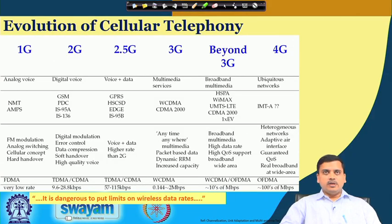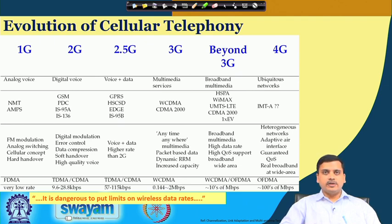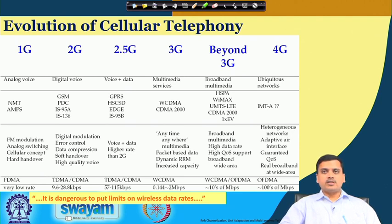We were discussing about the evolution, and in this particular picture from the previous discussion, we have summarized the different technologies which have evolved from the first generation to the fourth generation — different modulation techniques, different data rates, and different access methodologies. A very famous statement holds true: it is dangerous to put limits on wireless data rates, and this will remain true when we discuss the fifth generation of mobile communication systems.